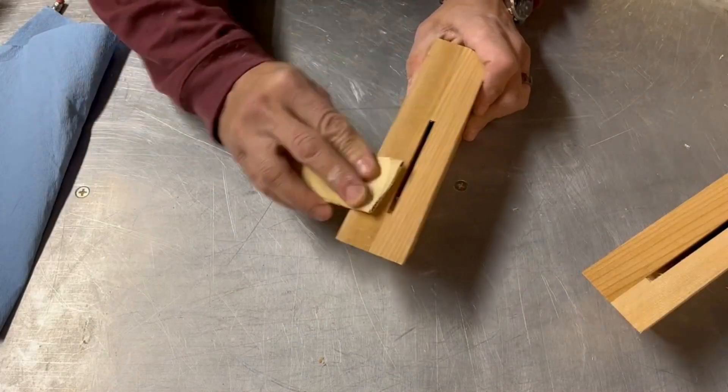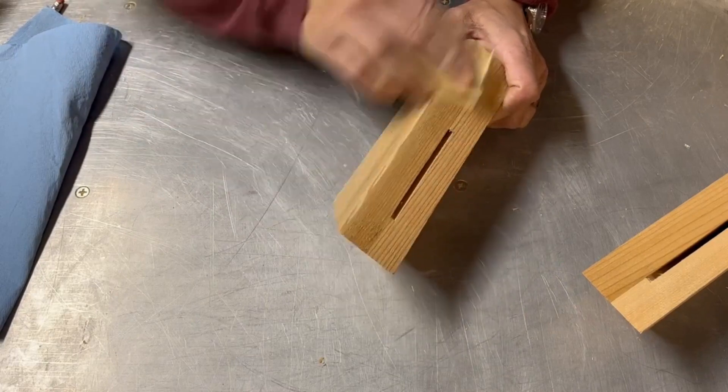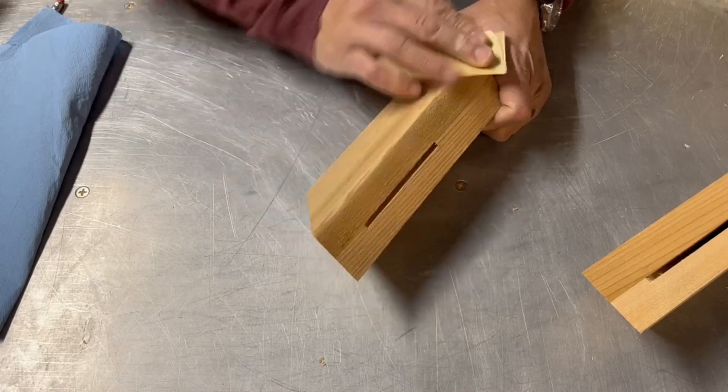Next, finish sanding the block and I definitely would not recommend doing this all by hand. I broke out the five inch orbital sander as soon as I could.